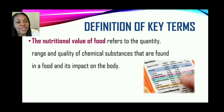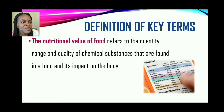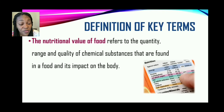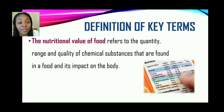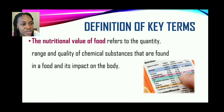The next term is the nutritive value of food. Even based on this image being displayed, could you tell what the nutritive value of food means? This refers to the quantity, range, and quality of chemical substances that are found in a food and its impact on the body. What do we call those chemical substances found in food? They are called nutrients.